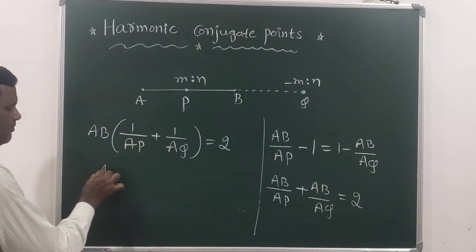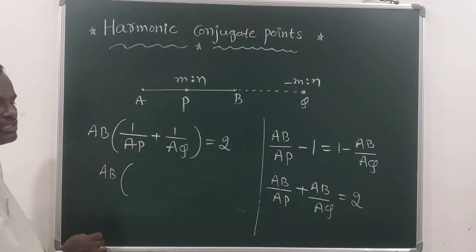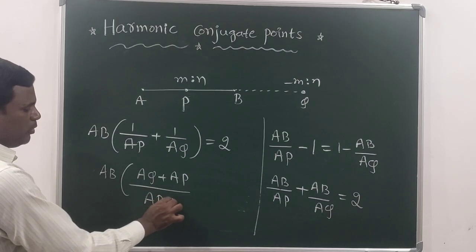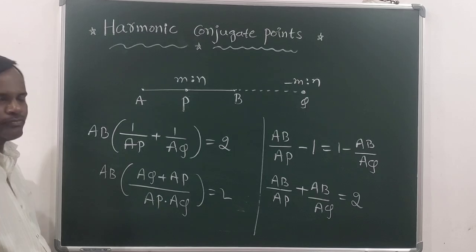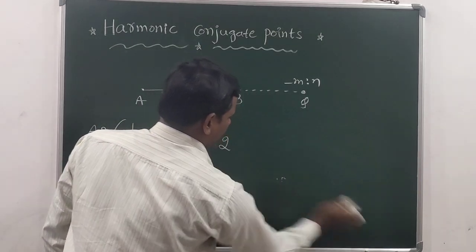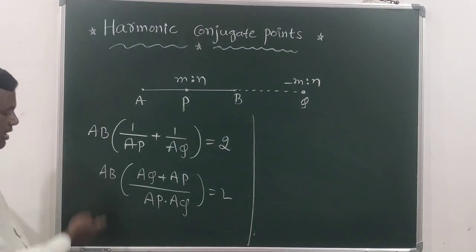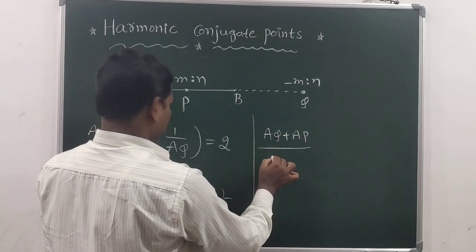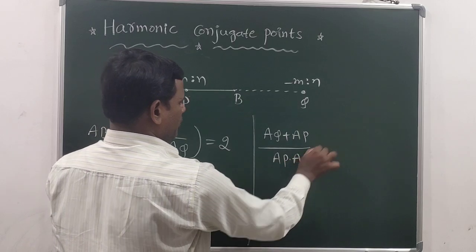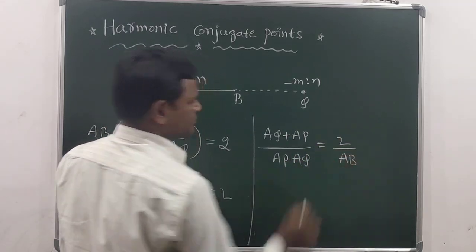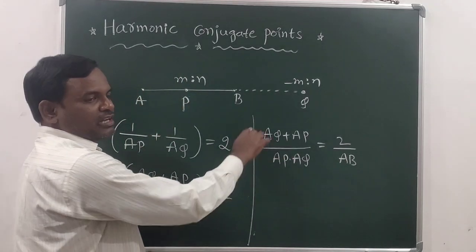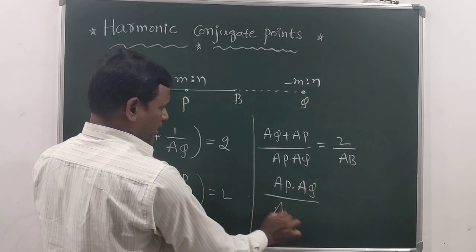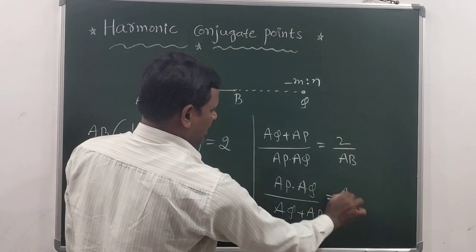Now do the cross-multiplication, so that you get AQ plus AP, divided by AP times AQ, which is equal to 2 divided by AB. Then taking reciprocal on both sides, you get AP times AQ divided by AQ plus AP, which is equal to AB by 2.